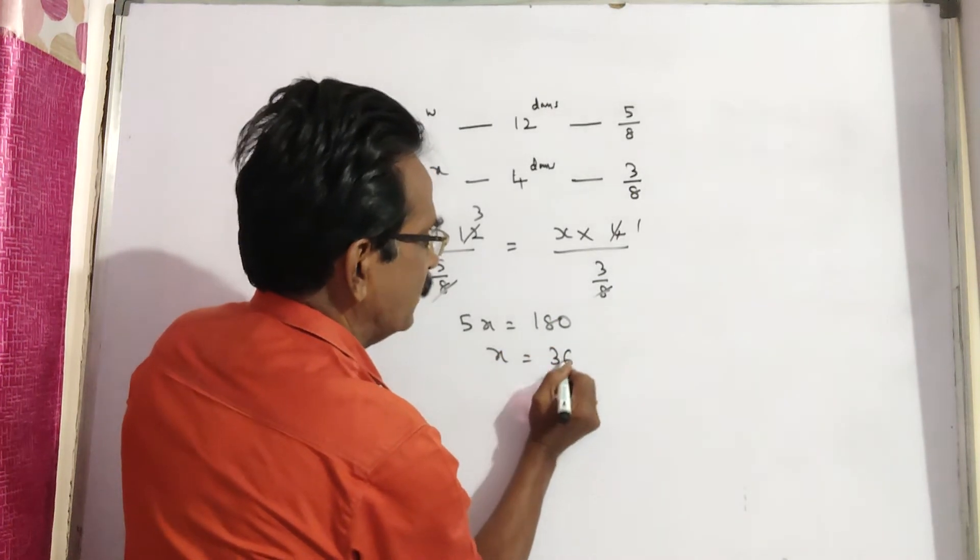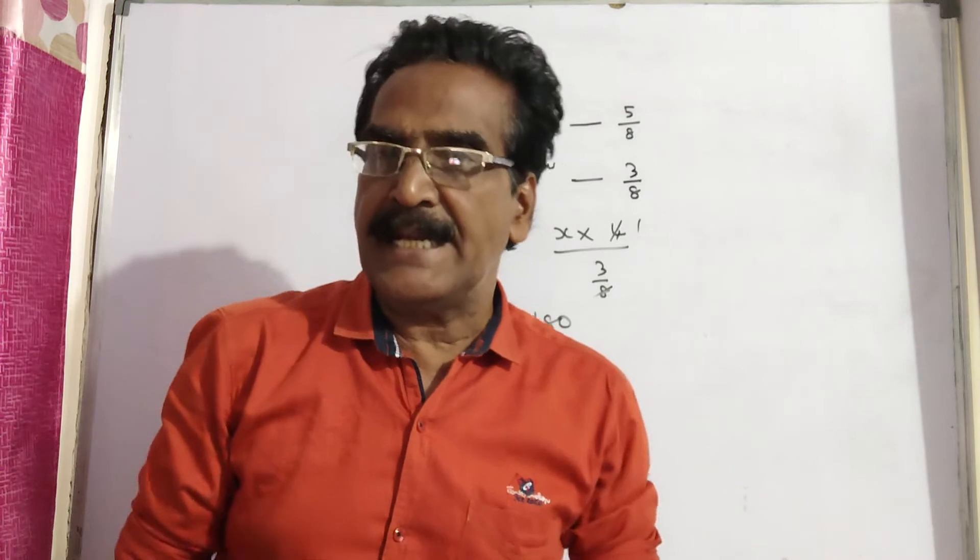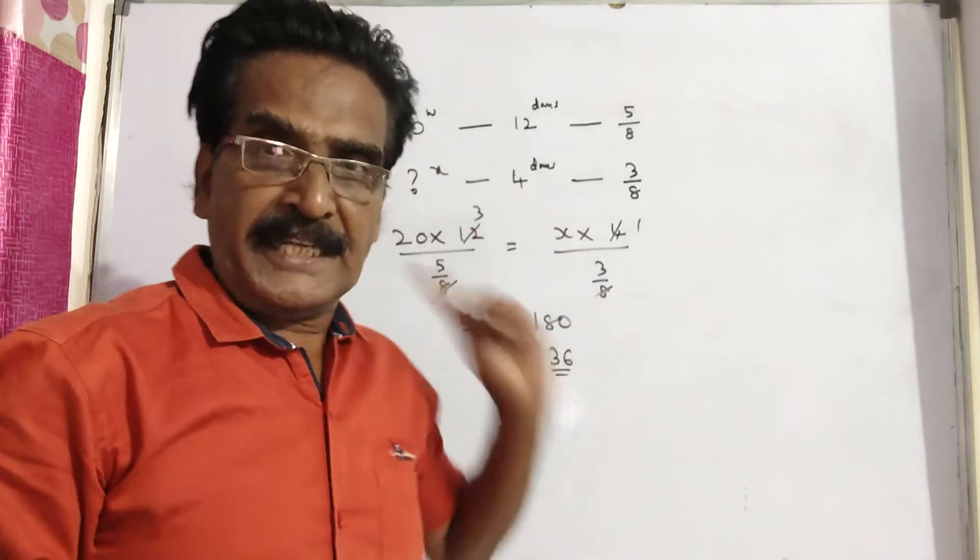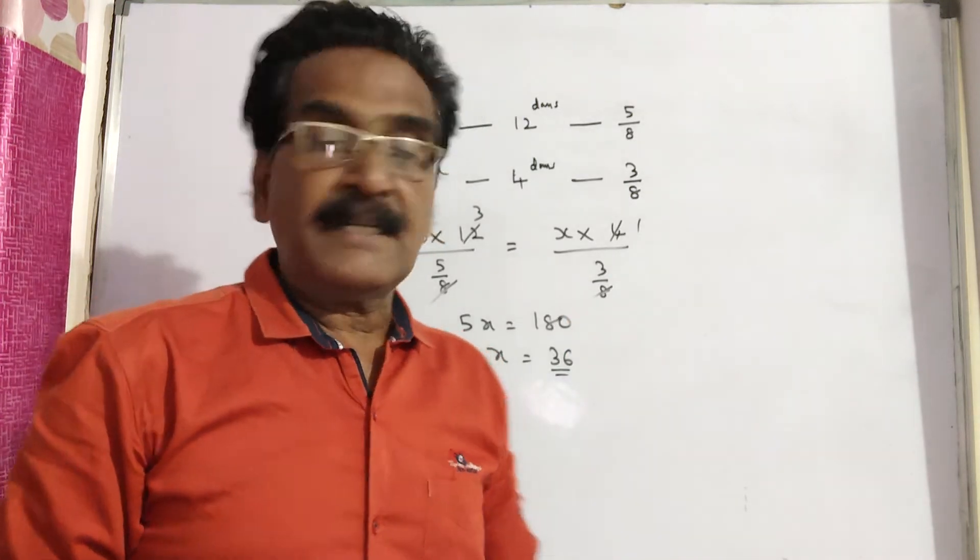X is equal to 36. So to complete the remaining 3/8 work in the remaining 4 days, 36 men are required.